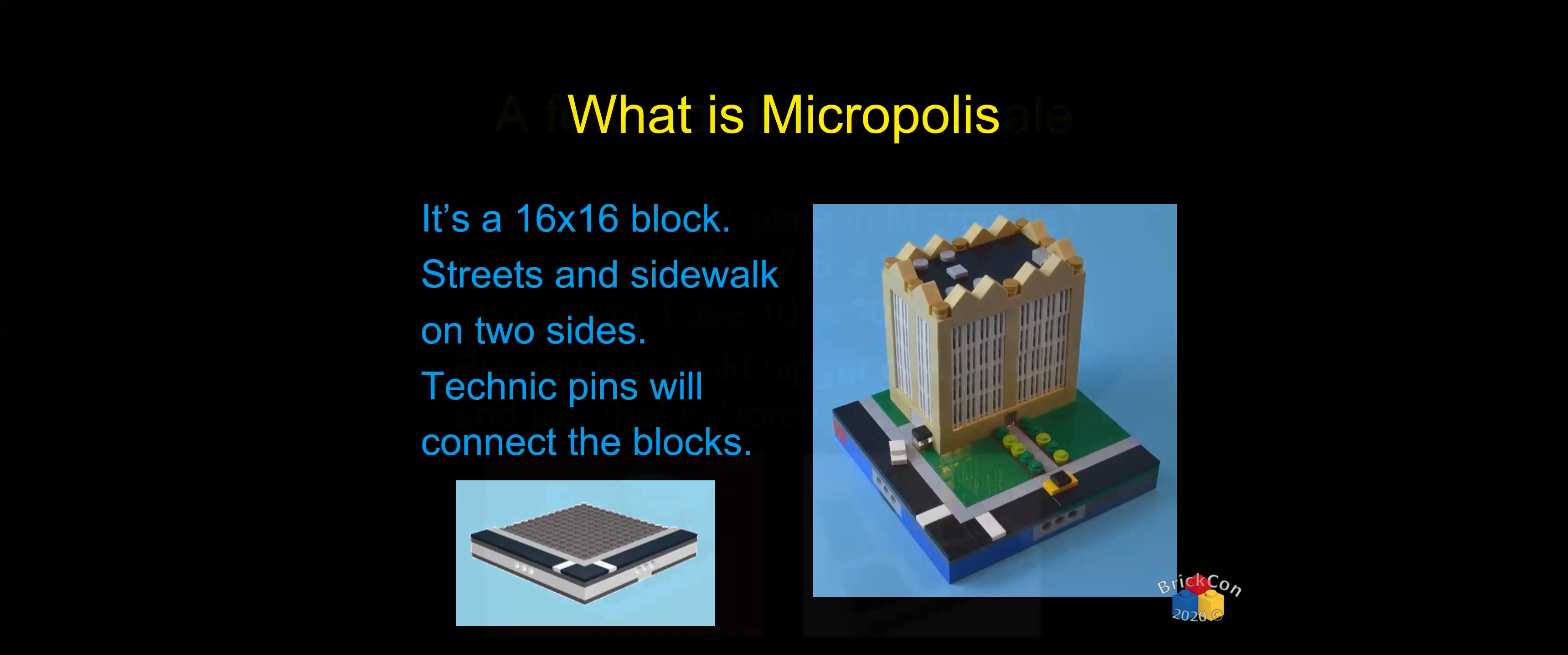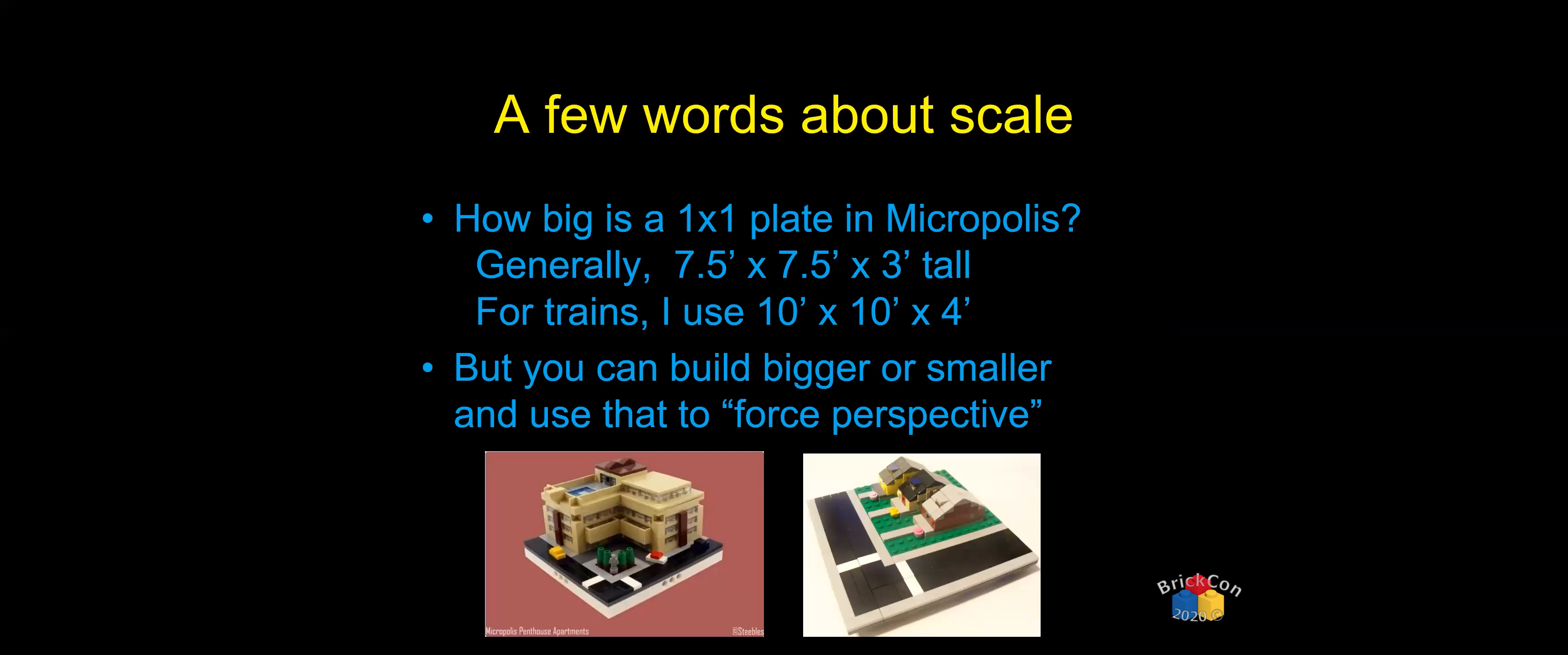On scale, the cars themselves tend to be about two studs by a plate and a plate tall for typical automobiles. It's a rough scale. So you're looking at maybe seven and a half foot by seven and a half foot by three foot tall for that one by one red tile on the car, just as an idea for how to build.